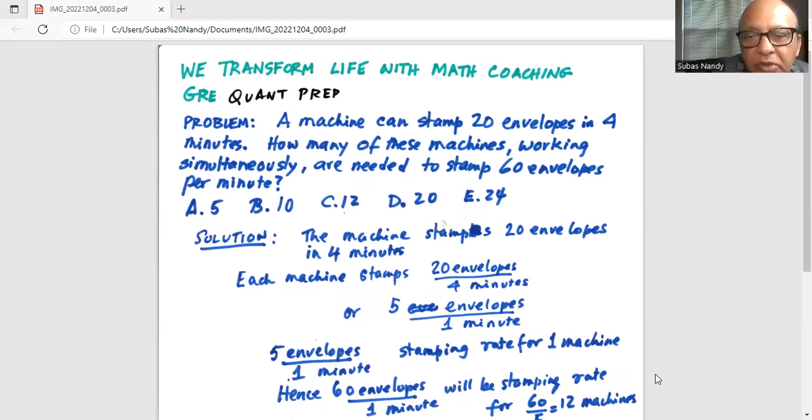The machine stamps 20 envelopes in four minutes. So each machine or one machine stamps 20 envelopes divided by four minutes, or five envelopes per minute. So five envelopes per one minute is the stamping rate for one machine.